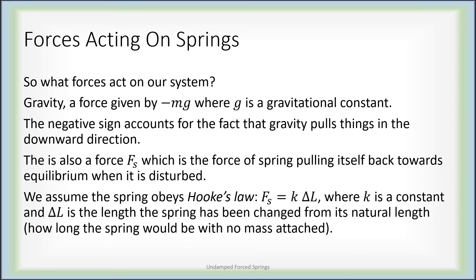We're also going to assume the spring obeys Hooke's law, so F sub s is k times delta l, where k is some constant that depends on the spring, and delta l is the length the spring has been changed from its natural length. This is not the same thing as the equilibrium length. The natural length of a spring is what position it would be in if there were no mass attached.